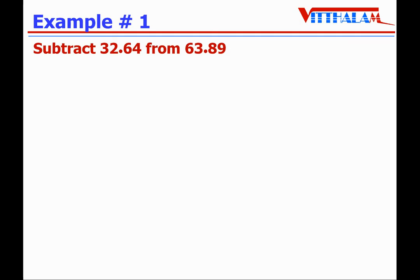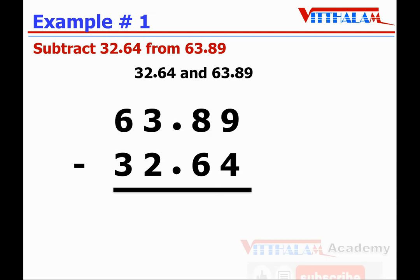Subtract 32.64 from 63.89. First, convert them into like decimals — they are already like decimals because both have two digits in the decimal part. Then we will write the decimal numbers vertically and align the decimal points as well as digits with similar place value.